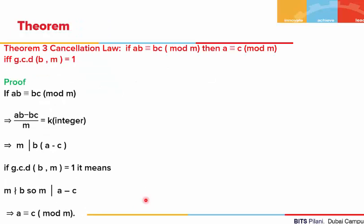Let's look at the third theorem — a very important theorem about the cancellation law. It states: if ab is congruent to bc mod of m, then a is congruent to c mod of m if and only if the gcd of b and m is 1. In other words, given ab is congruent to bc mod of m, we can cancel that factor from both sides which is relatively prime to m.